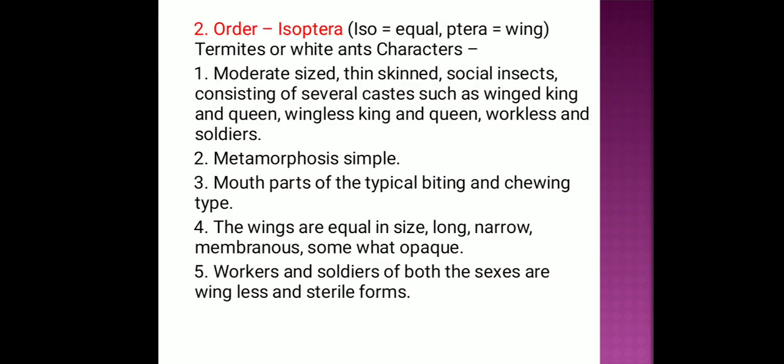Order Isoptera: 'Iso' means equal, 'ptera' means wings — both forewings and hindwings are equal in size. Character features: moderate size, thin-skinned social insects consisting of several castes such as winged king and queen, wingless workers and soldiers. Metamorphosis is simple. Mouthparts are of the biting and chewing type. Wings are equally sized, long, narrow, and membranous. Workers and soldiers of both sexes are wingless and sterile forms.